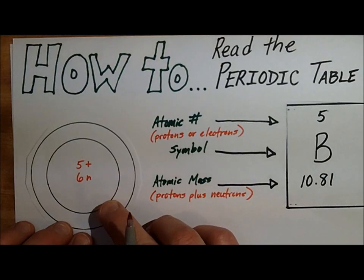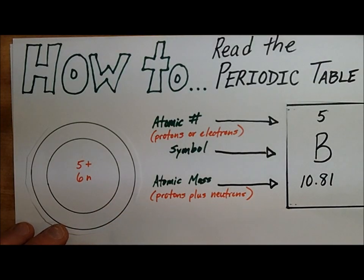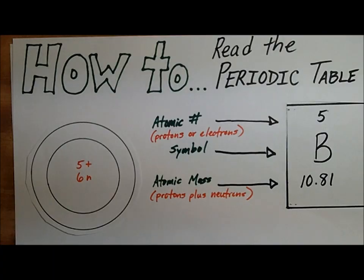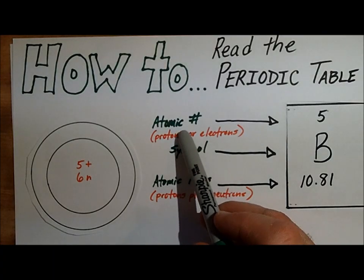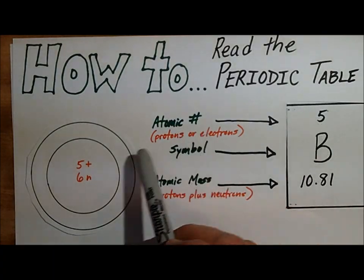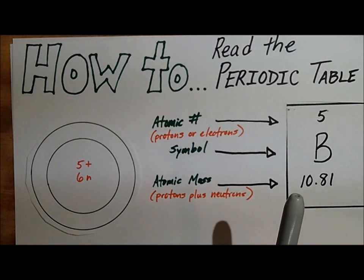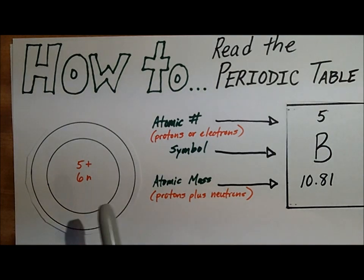Surrounding the nucleus, you have a cloud of electrons spinning really fast — so fast that you can't really even see them; they'd be a blur. Those electrons will be the same number as the protons, so we're going to have 5 of those spinning around. As they spin, they're going to be in these different shells.